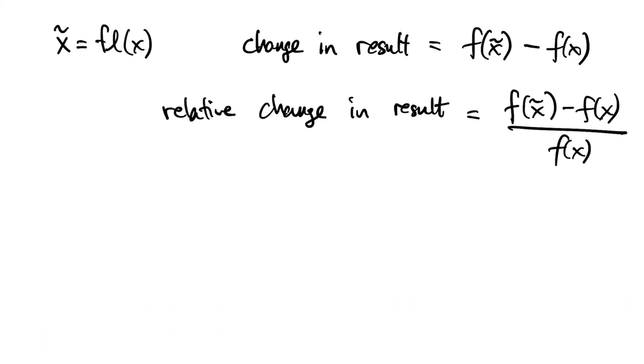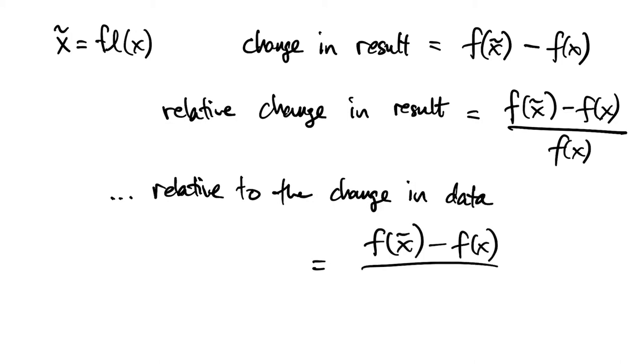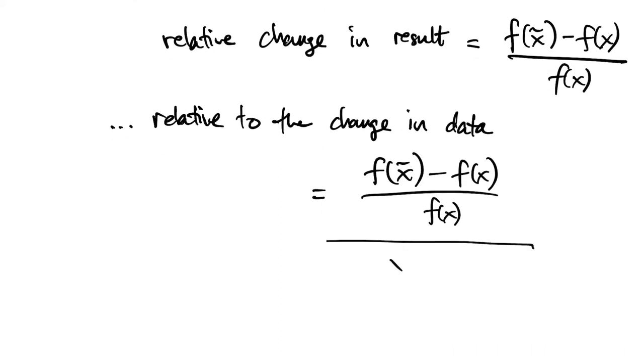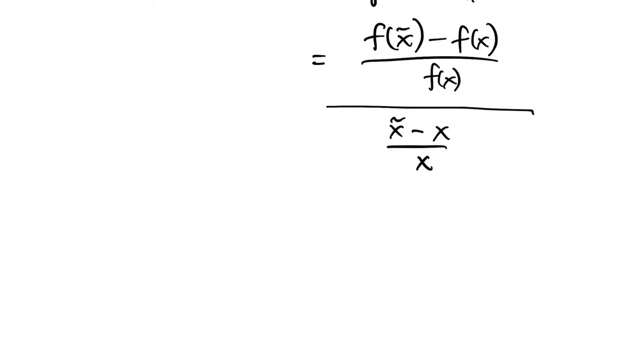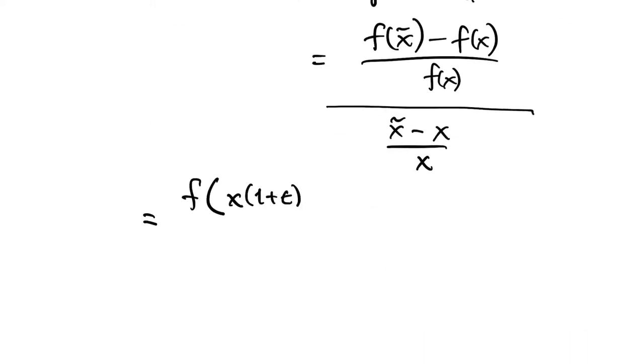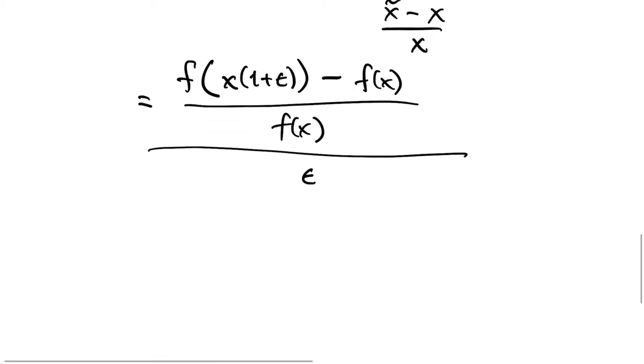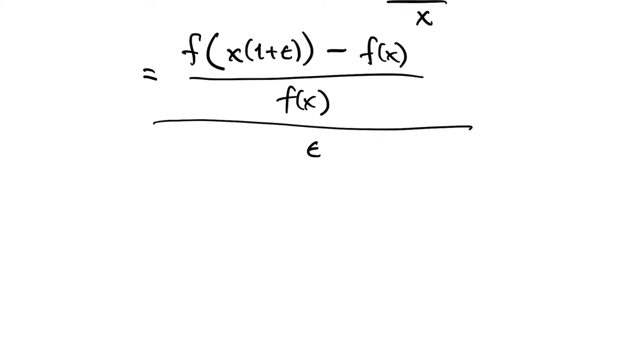Now before we said that in our specific example this ended up being proportional to the size of the perturbation to the data. So let's look at that ratio. Let's look at the relative change in the result, all divided by the relative change in the data. So now putting in the fact that x tilde is the floating point representation of x, we can say that x tilde equals x times 1 plus a small epsilon.